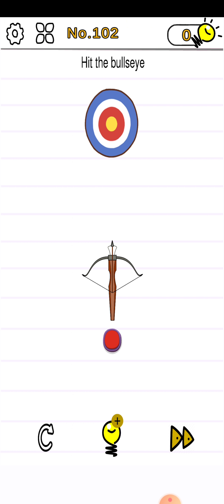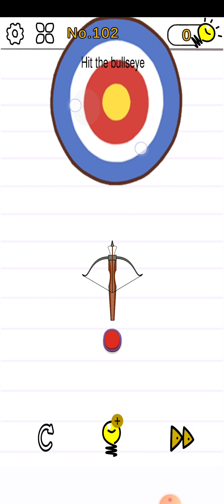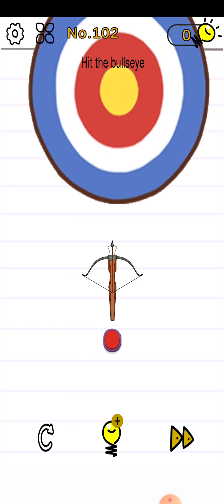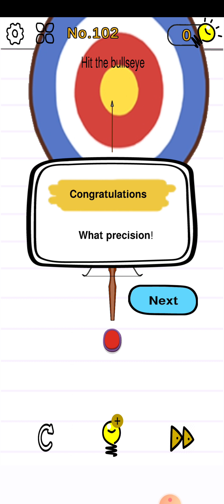So you need to make the target bigger by using two of your fingers. Just tap two of your fingers and stretch it, just zoom it, make it bigger like this. And after that, press your finger on the red button to hit the arrow and it hits the bullseye.